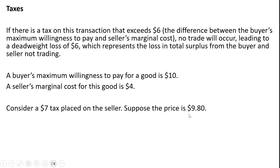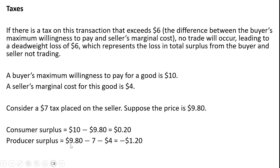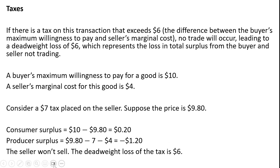Consider a $7 tax placed on the seller. Suppose the price is $9.80. Consumer surplus is $10 minus the price, giving a consumer surplus of $0.20. Producer surplus is $9.80 minus the tax minus the marginal cost, which means producer surplus is negative. So the producer would not sell this item — there would be no trade. The seller won't sell. The deadweight loss of the tax is $6, the $10 minus $4.